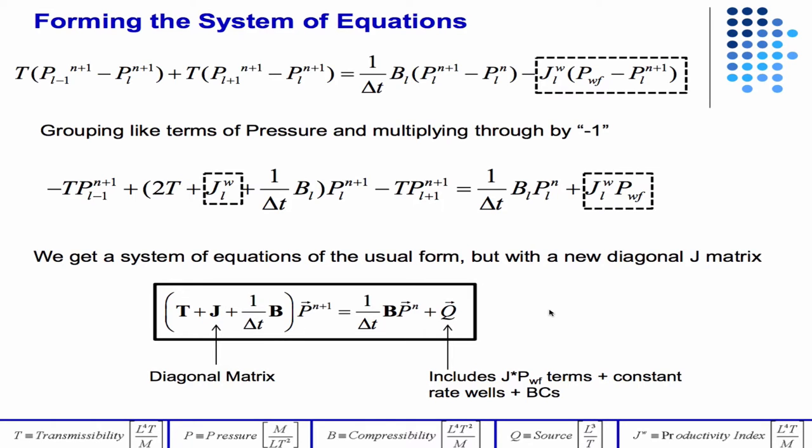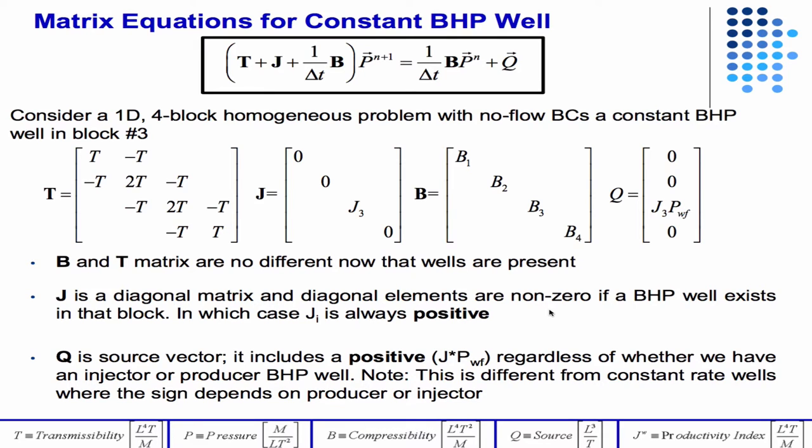So of course if there's no wells, there's no J, then we get back the implicit form of the equations we've had before. If there is a J, then in the location of the well, J is a diagonal matrix, and it would only be non-zero on the diagonal entries associated with the grid blocks that have wells in them. And then you have an additional term that comes over here into the Q matrix as well. You might have something like this for our four grid block system with a well in the third well.